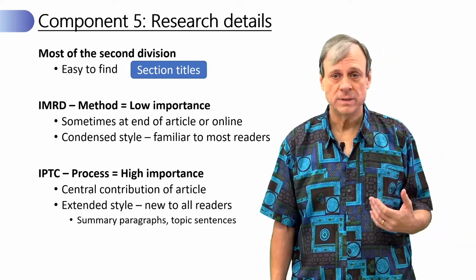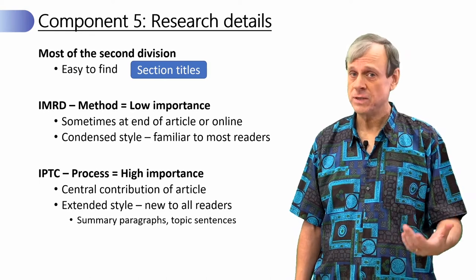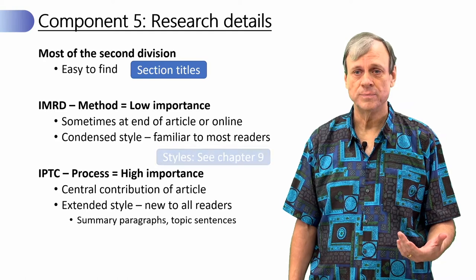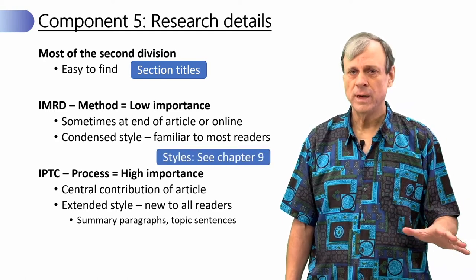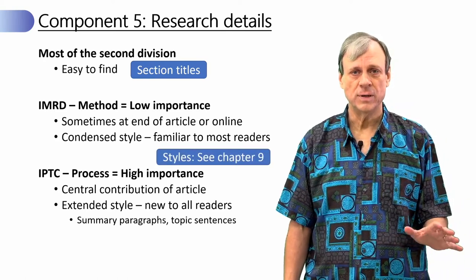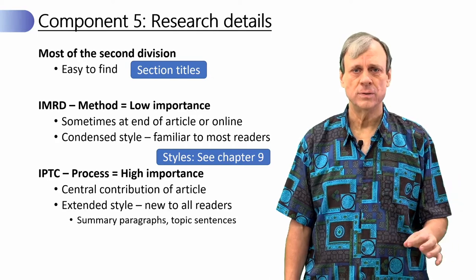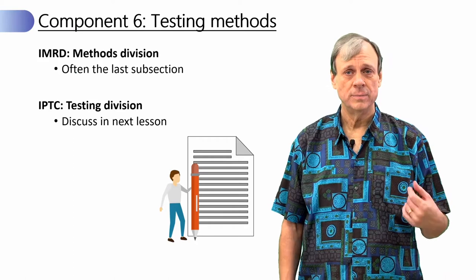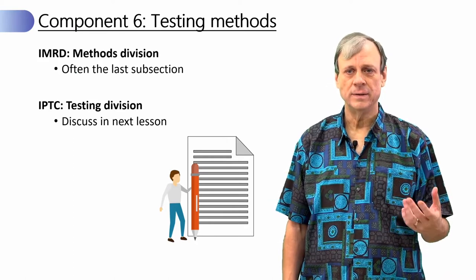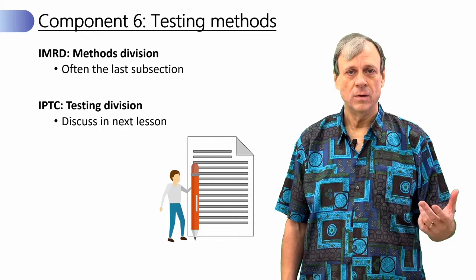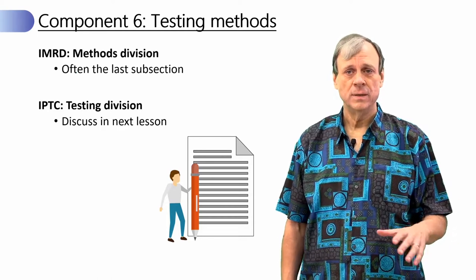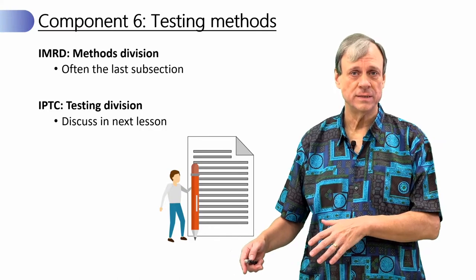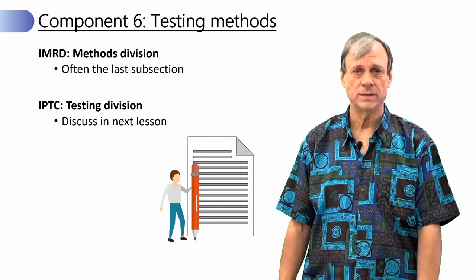In IPTC there are often summary paragraphs, topic sentences, and other techniques that make it easier for the reader. We'll talk about styles in chapter nine, but you can look ahead if interested. We'll also briefly mention component six — the testing methods — because we'll find that in the second division in IMRD, often in the last subsection, but in IPTC it occurs usually in the testing division, and we'll talk about it for those articles next week.